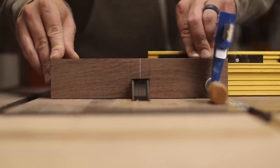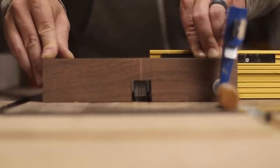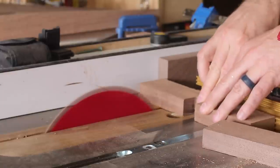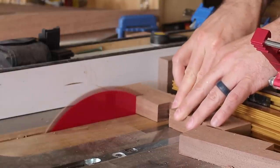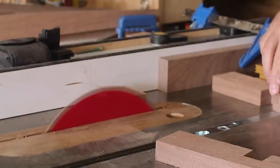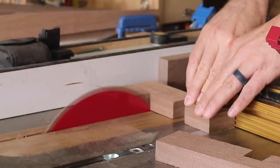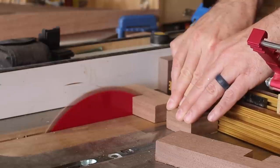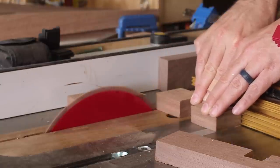Somehow my dado stack got out of square, as you can see here. Luckily I was sneaking up on the joint, so I was able to fix this later on. Speaking of fixing things, I made all of the center stretchers for all three planters the same length and I wasn't really happy with the scale, so I set up a stop block so I could cut off even pieces on each side on two of the three sets of planters.